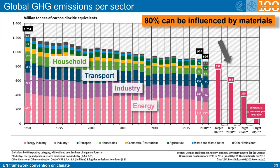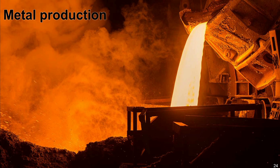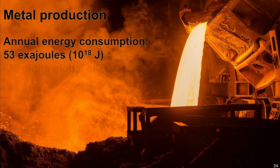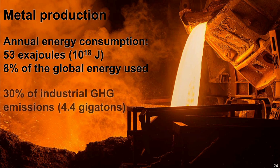The third and rather dramatic take-home message from this diagram is the huge reduction in greenhouse gas emissions that is required when aiming at fulfilling the targets of the United Nations Greenhouse Gas Protocol by 2050. Metallurgy amounts to about 53 exajoule of energy consumption, which translates to 8% of the total energy consumed globally. About 30% of all industrial greenhouse gas emissions come from the metallic sector, making up 4.4 gigatons of greenhouse gas, mostly CO2.